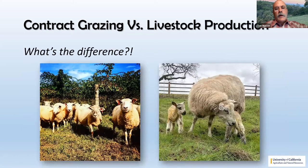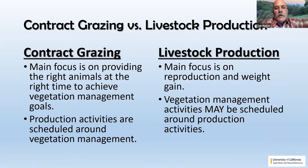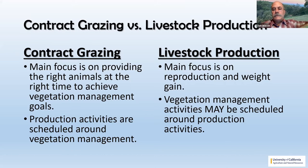The major difference between good grazing management and contract grazing is that contract grazing refocuses the outputs from livestock production to vegetation management. In contract grazing, the main focus is to provide the right animals at the right time — production activities are scheduled around vegetation management. If the focus is more on livestock production, the main focus is on reproduction and weight gain, with opportunities for vegetation management around those production activities.